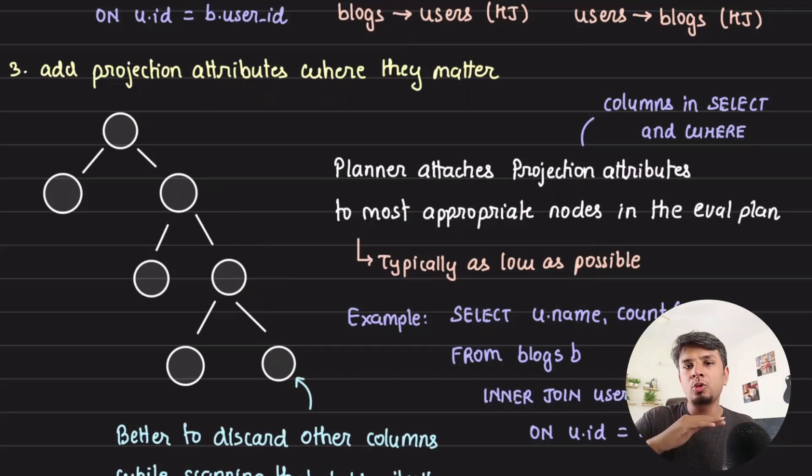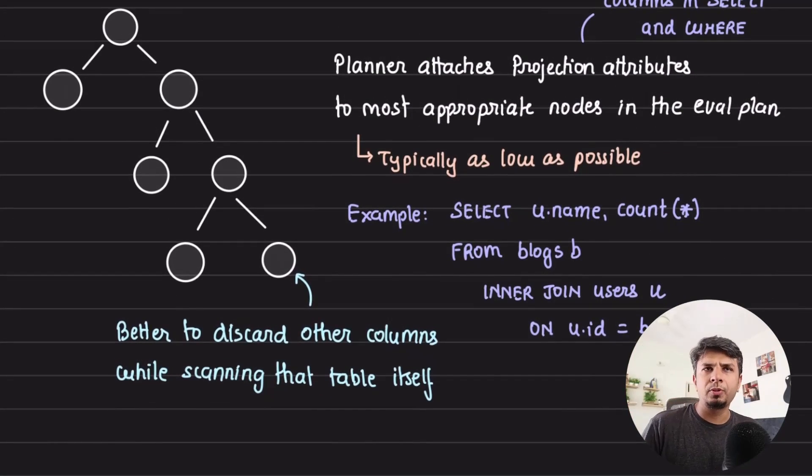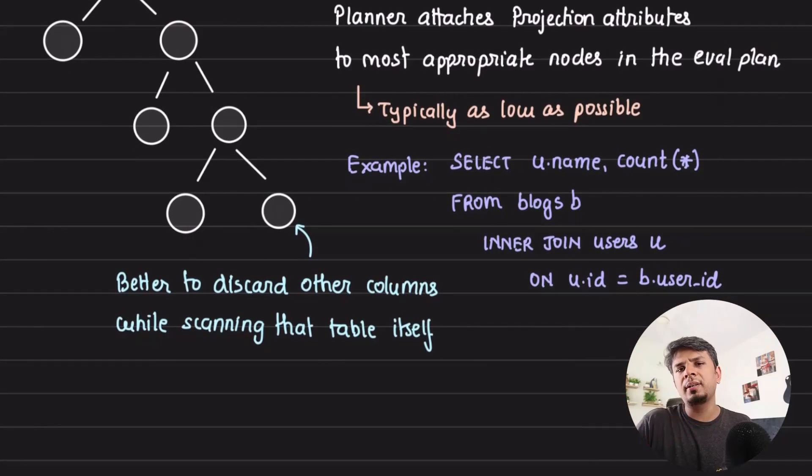The most efficient way to do it is to trim off and just pick the columns that you need bottom up. This way, you reduce the amount of data that needs to be processed at each level. A planner typically attaches the projection attributes, whatever you are passing in the select clause and the where clause, as low as possible so that it can generate relatively efficient plans.